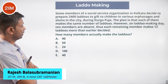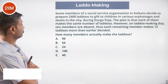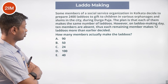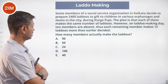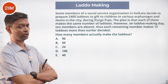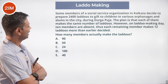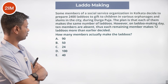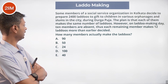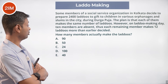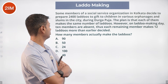Some members of a social service organization in Kolkata decide to prepare 2400 laddus to give to children in various orphanages and slums in the city during Durga Puja — a nice initiative. The plan is that each of them makes the same number of laddus. However, on laddu-making day, 10 members are absent.